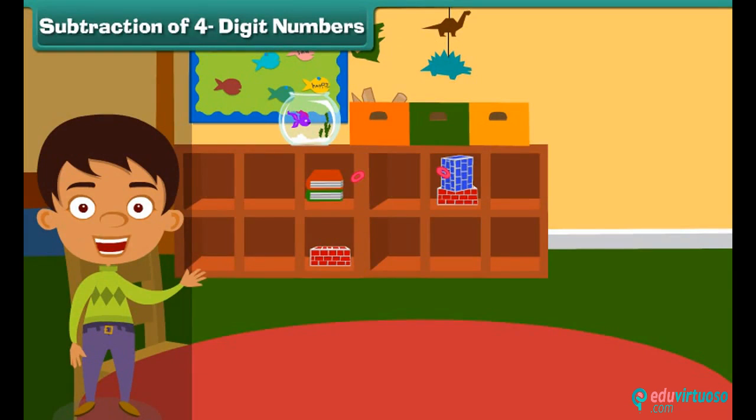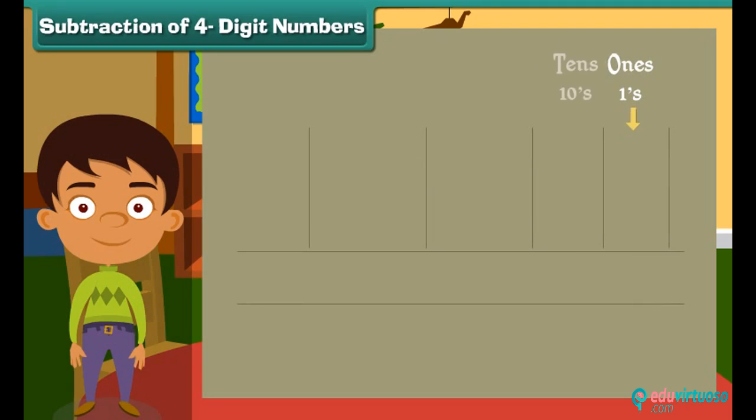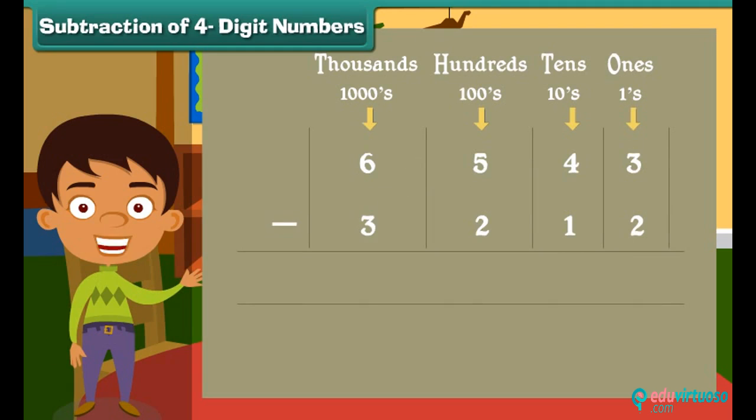Subtraction of 4-digit numbers. Friends, Ben has now moved to solve subtraction. Let us subtract 3212 from 6543. Write the numbers in the respective columns. We start subtraction from ones column.